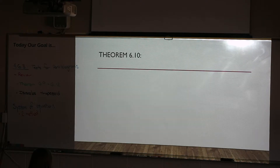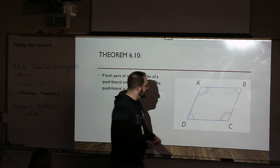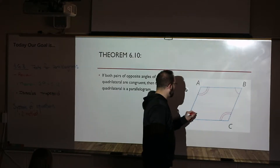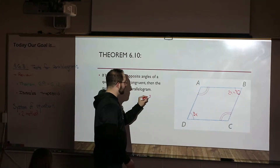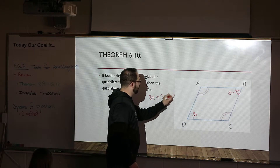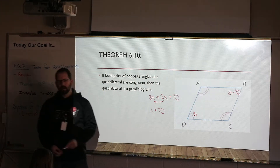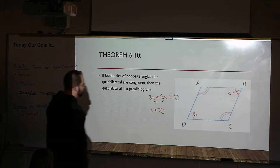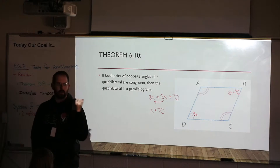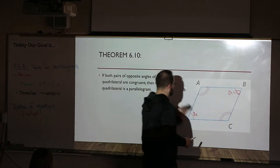Theorem 6-10: opposite angles are equal. A problem we've done previously might give us 3X and 2X plus 70. Same idea — set them equal to each other, subtract the 2X across, and you're left with X equals 70. Then plug that in to figure out what all the angles are. It's very straightforward. Questions or comments about what you'll do in your homework? No — that's the easy stuff you do every day.